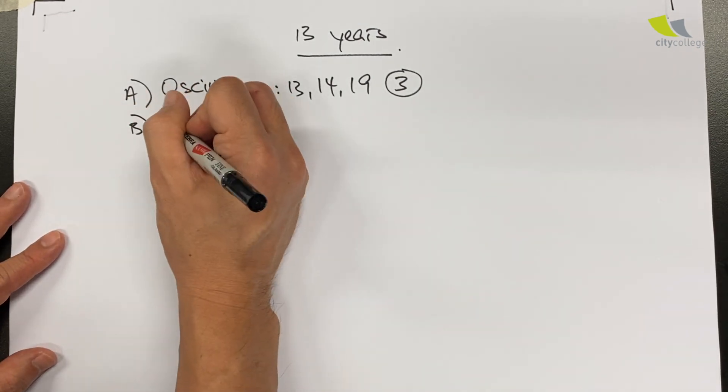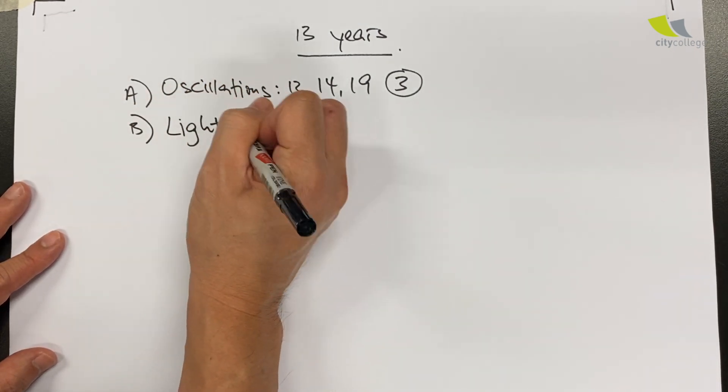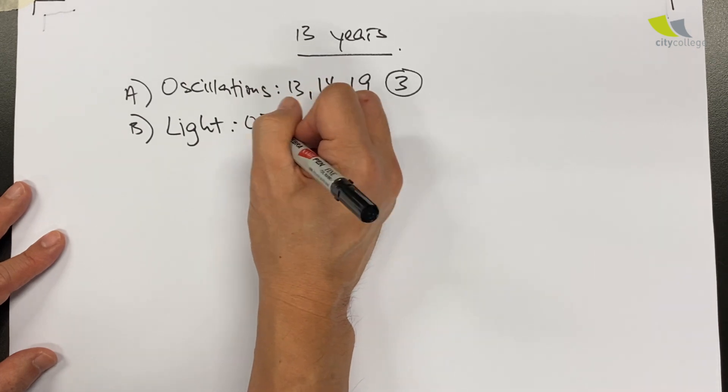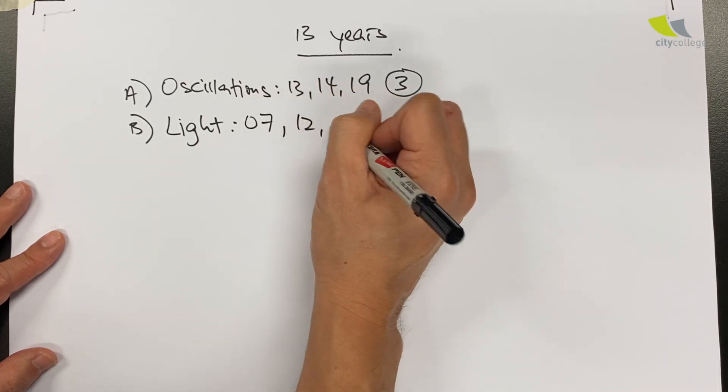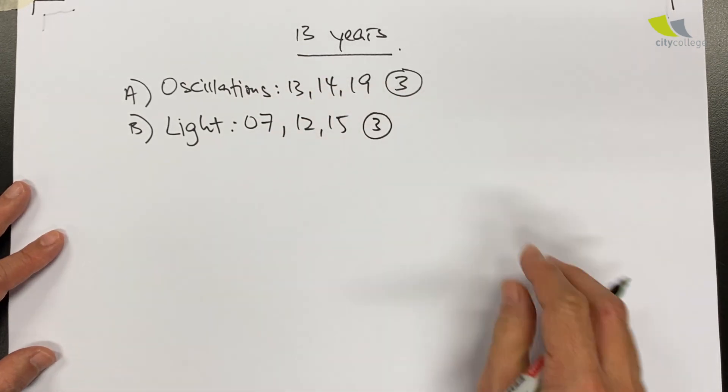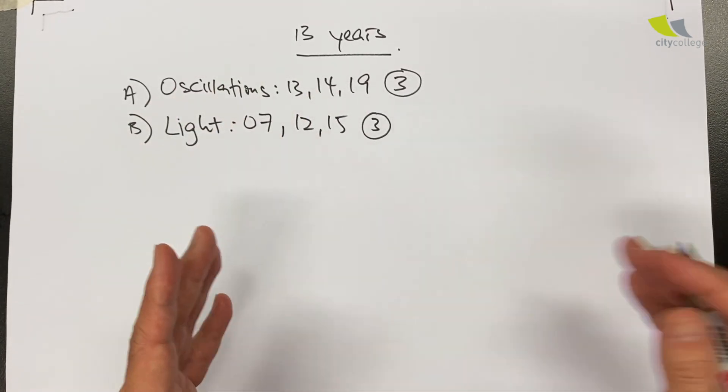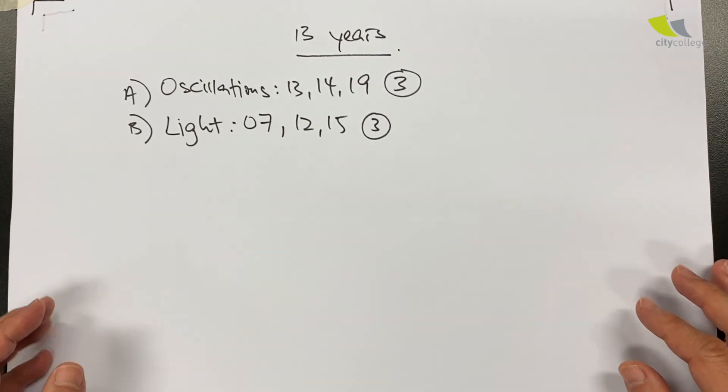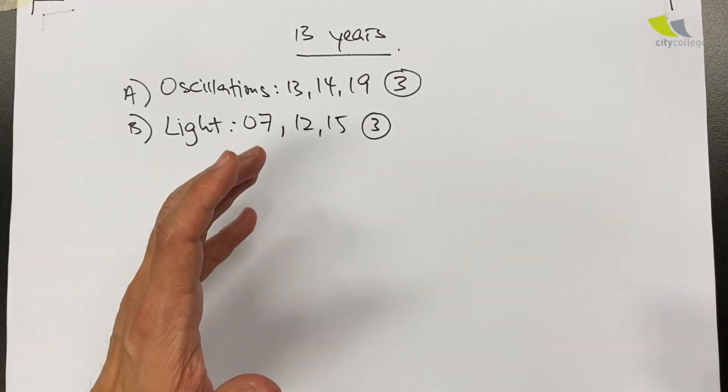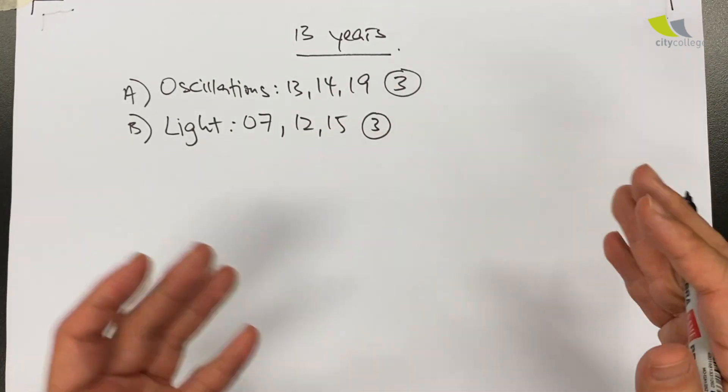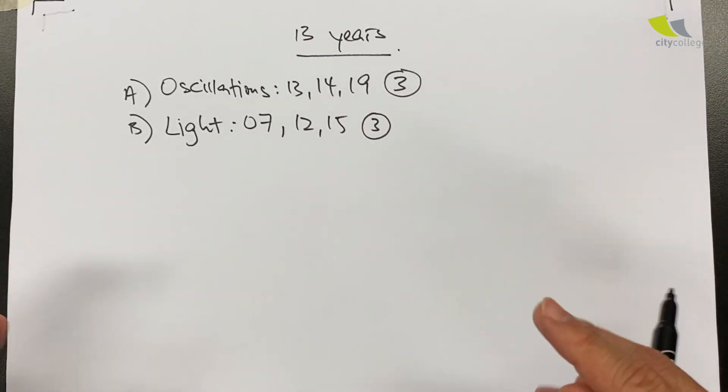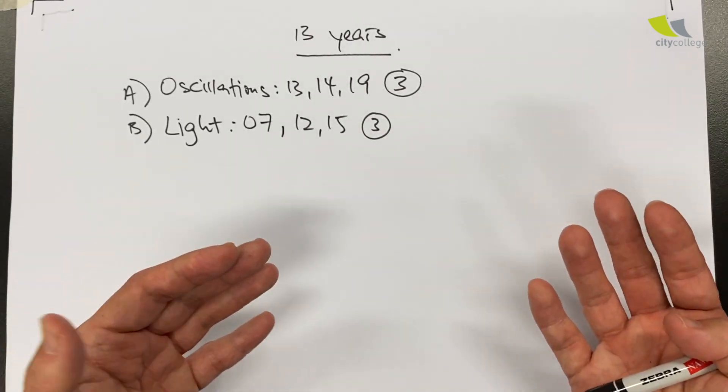Next are experiments that got to do with light. They appeared in 2007, 2012, and 2015, three times as well. These are experiments that make use of the converging lens, most likely to find the focal length, or a glass block looking through it to find your refractive index. One particular year you are even required to find the refractive index of water.